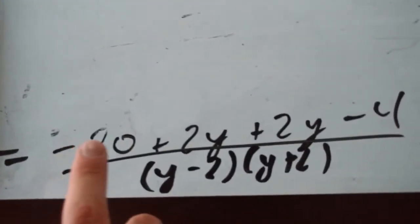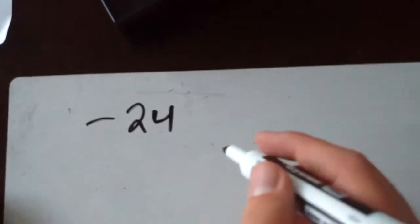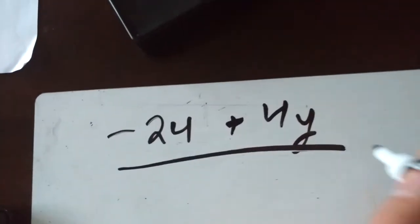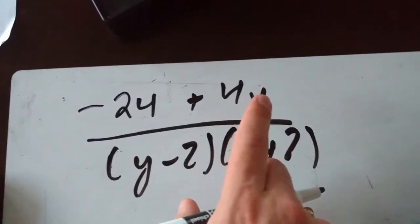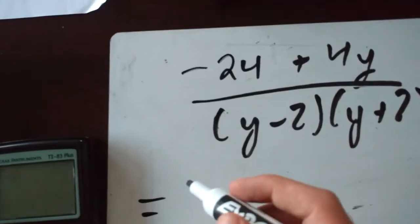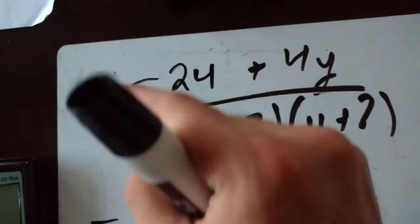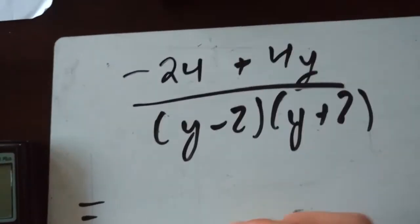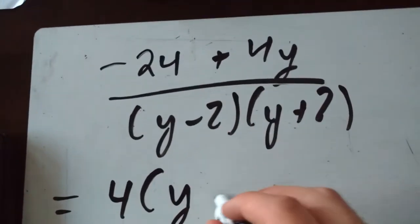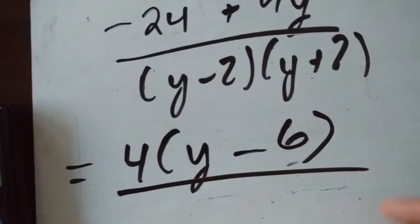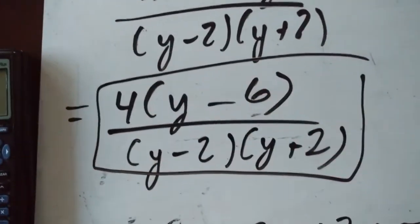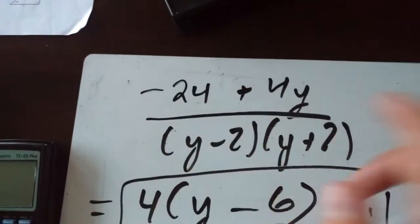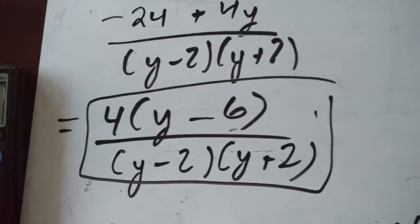Collecting like terms: minus 20 minus 4 gives minus 24, and plus 2y plus 2y gives plus 4y. So we have (4y minus 24) over (y minus 2)(y plus 2). We can factor a 4 out of the numerator to get 4(y minus 6) over (y minus 2)(y plus 2). Either form — 4y minus 24 or 4(y minus 6) — is an acceptable answer.